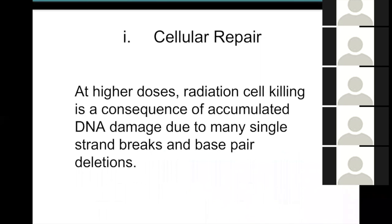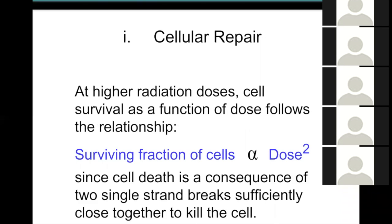At higher doses, radiation cell killing is a consequence of accumulated damage. Single hits, if close enough together, effectively cause a double-strand break. So at higher doses, surviving fraction is proportional to e^(−βD²), since cell death is a consequence of two single-strand breaks sufficiently close that the DNA cannot repair itself.